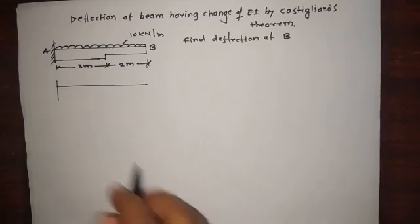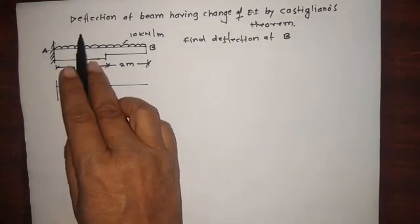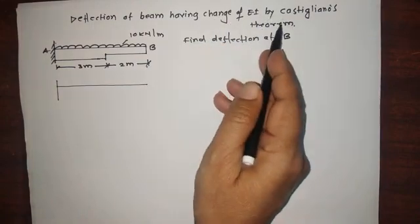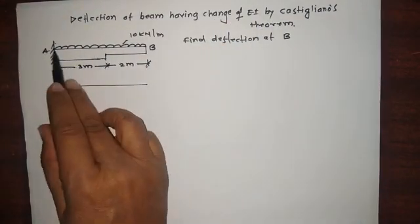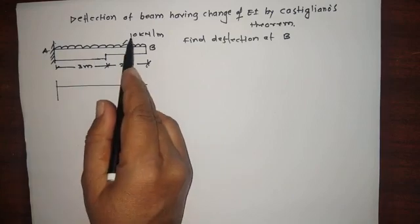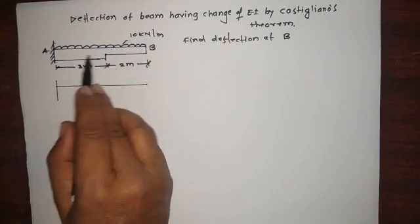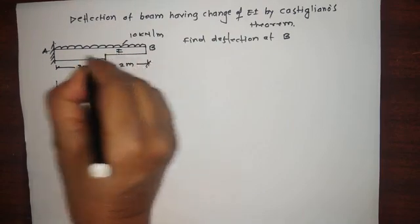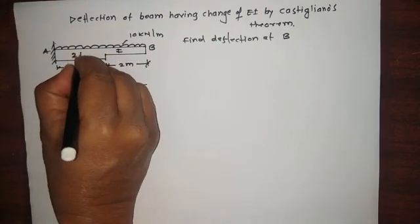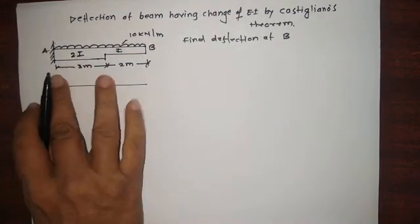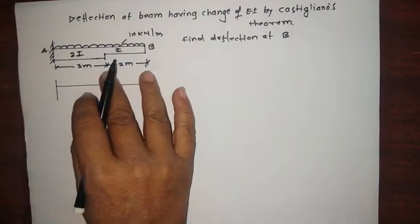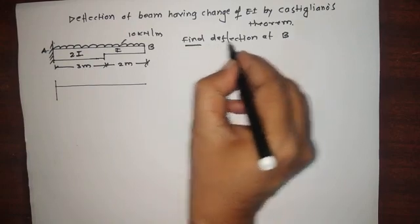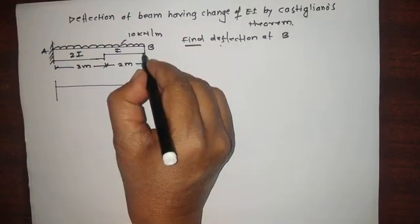Hello dear friends, today we will learn the deflection of a beam having a change of EI by Castigliano's theorem. Suppose this is a beam subjected to 10 kilonewtons per meter, having a non-uniform EI — one EI for this portion and two EI for this portion. This length is 3 meters and this length is 2 meters. We are required to find the deflection at B, the free end.